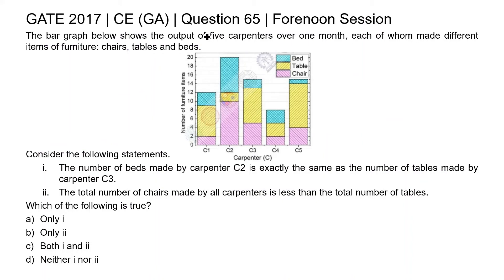This is question 65 from the civil engineering general aptitude section of GATE 2017 forenoon session. The bar graph below shows the output of 5 carpenters over 1 month, each of whom made different items of furniture: chairs, tables, and beds. Consider the following statements: the number of beds made by carpenter C2 is exactly the same as the number of tables made by carpenter C3; and the total number of chairs made by all carpenters is less than the total number of tables. Which of the following is true?